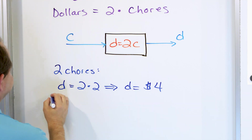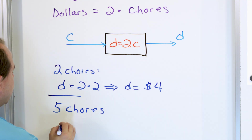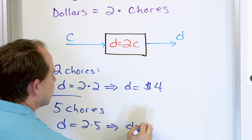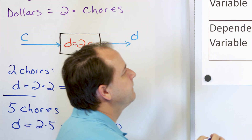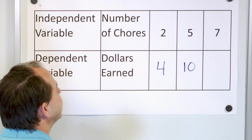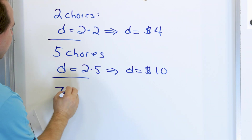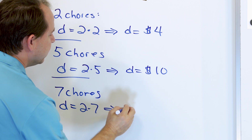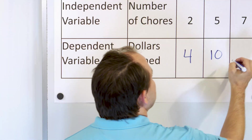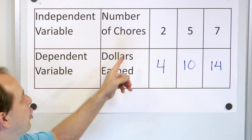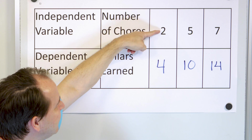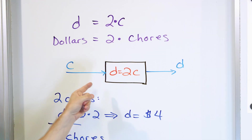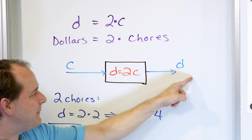When seven chores go in, D is two times seven — D equals fourteen dollars. So I know how many chores I'm doing and I calculate the dollars. I take two chores, multiply by two to get four; five chores multiplied by two to get ten; seven chores multiplied by two to get fourteen. This function is what is doing that — chores go in and dollars come out. It's just a calculation.